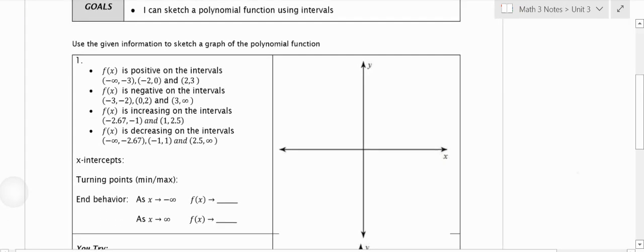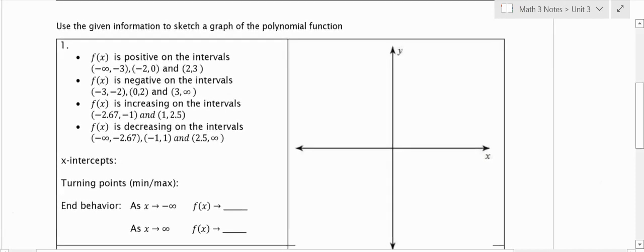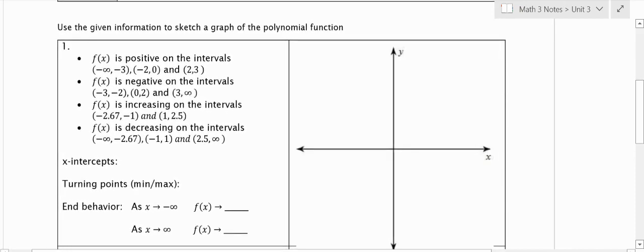The example we're going to look at is if we have these statements that give us the positive and negative intervals. Remember, positive and negative intervals, when we look at our x-axis, where it changes from positive to negative is essentially identifying our x-intercepts.